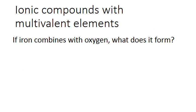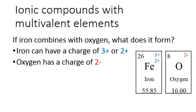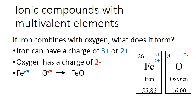We'll start off with ionic compounds that have multivalent elements in them. Our question is: if iron combines with oxygen, what does it form? Iron is not one of the first 20 elements, and the only reason I would include it is because it is a multivalent element, which means it can form multiple ions. Iron can form ions with a charge of 3+ or 2+. Oxygen can only form a charge of 2-. When we have iron 2+ and oxygen 2-, they're both 2s, so we can ignore the charges and we end up with FeO.